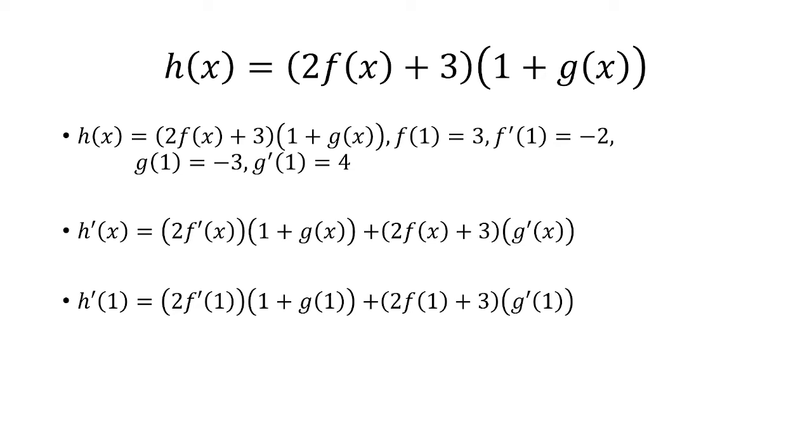Now we evaluate this at x equals 1. f prime of 1 is negative 2, so we have 2 times negative 2. g of 1 is negative 3, so we have 1 minus 3. f of 1 is 3, so we have 2 times 3 plus 3, and g prime of 1 is 4. Simplifying this, we get h prime of 1 equals 44.